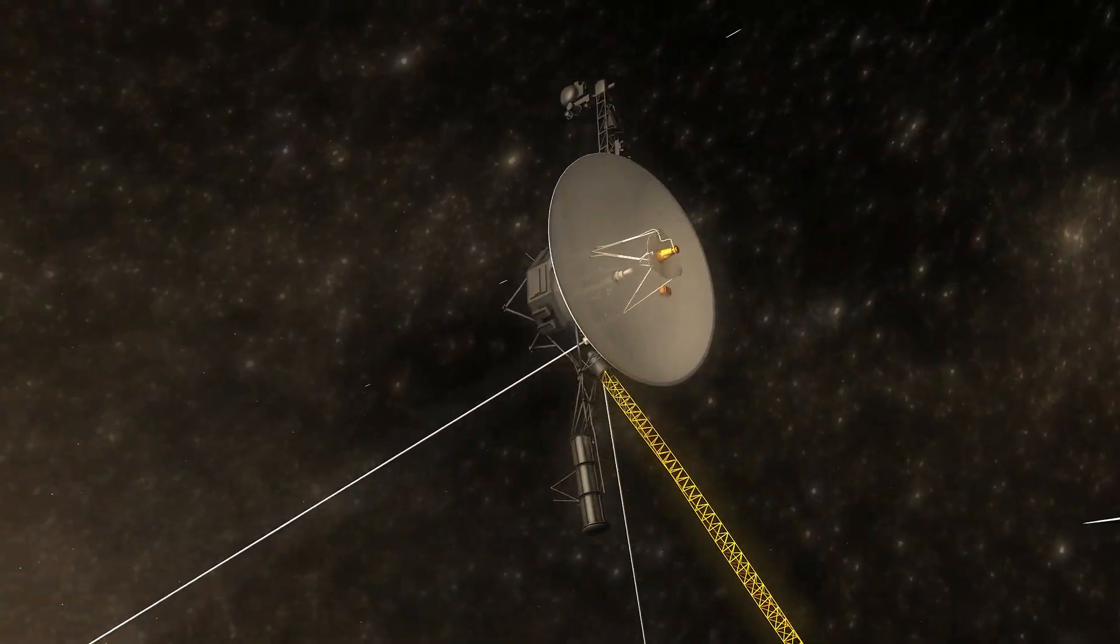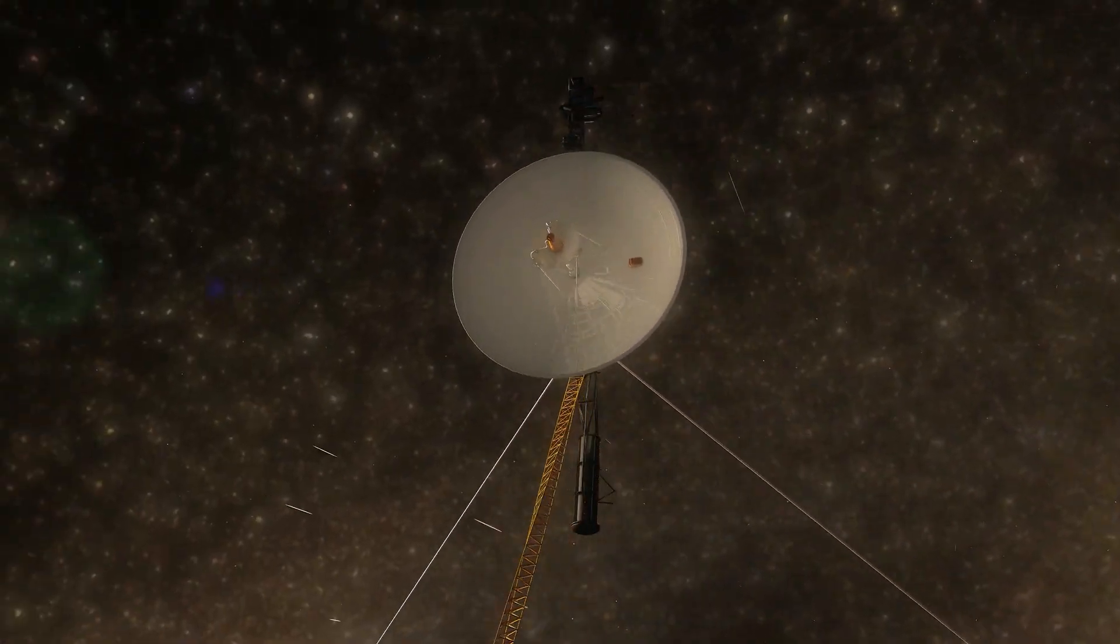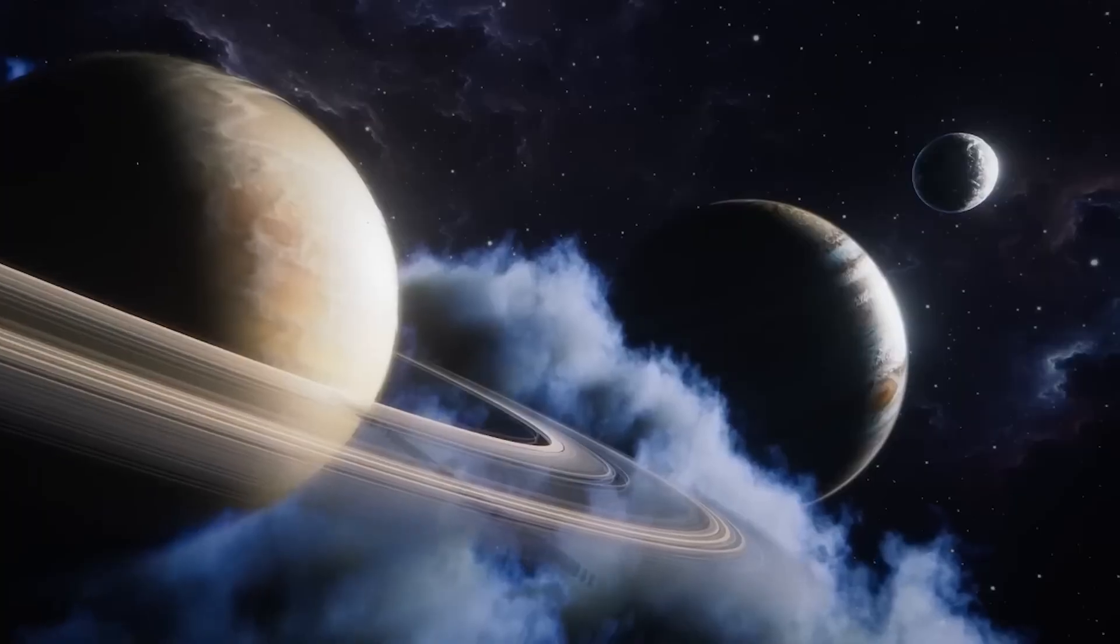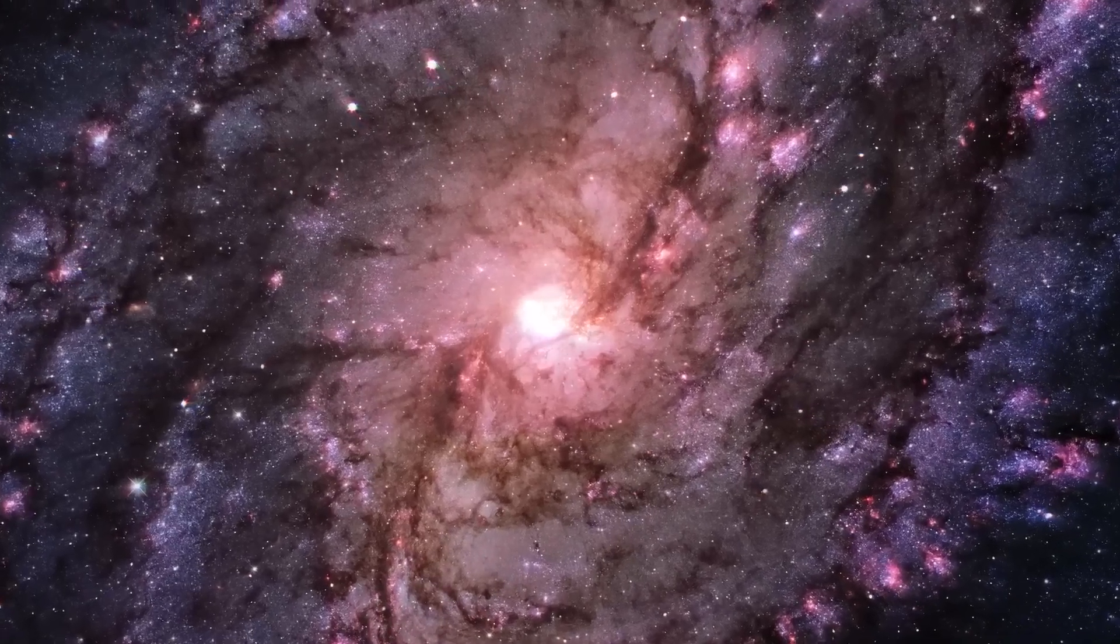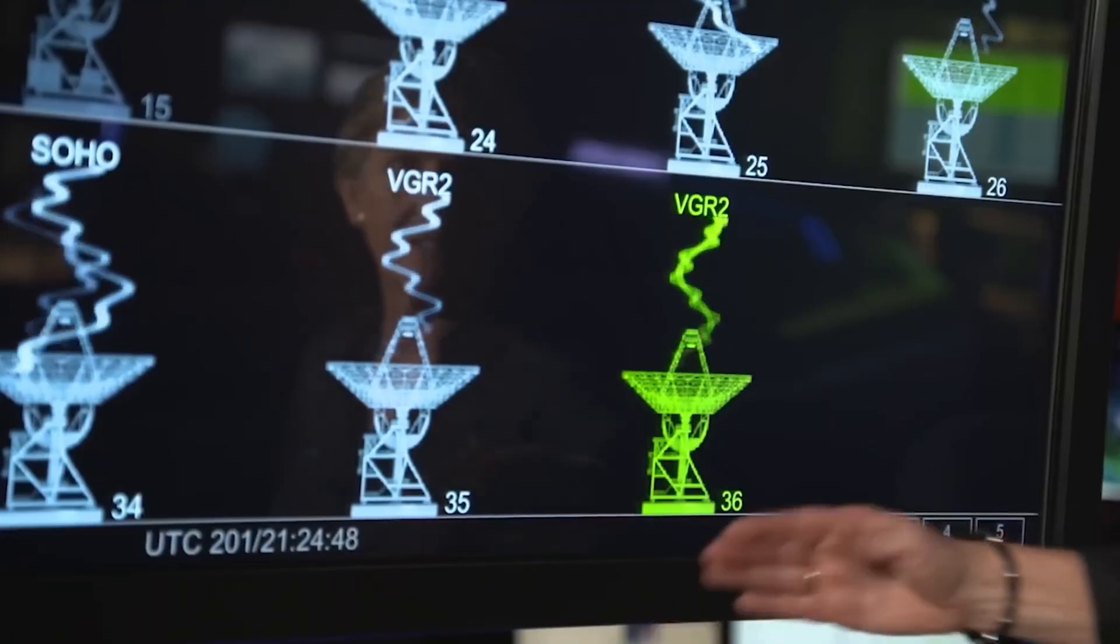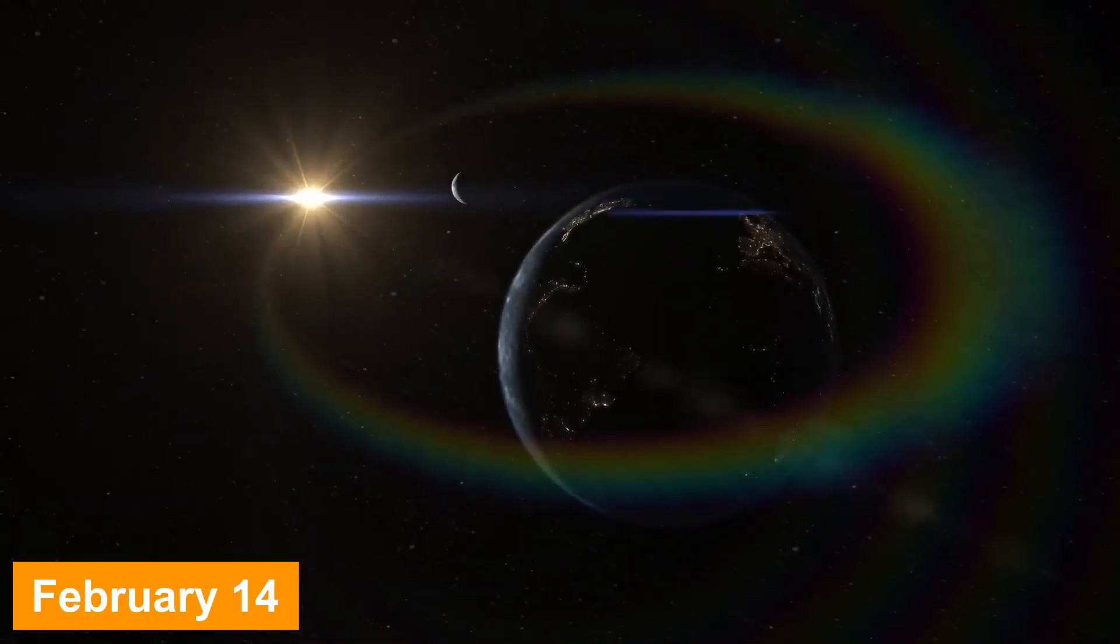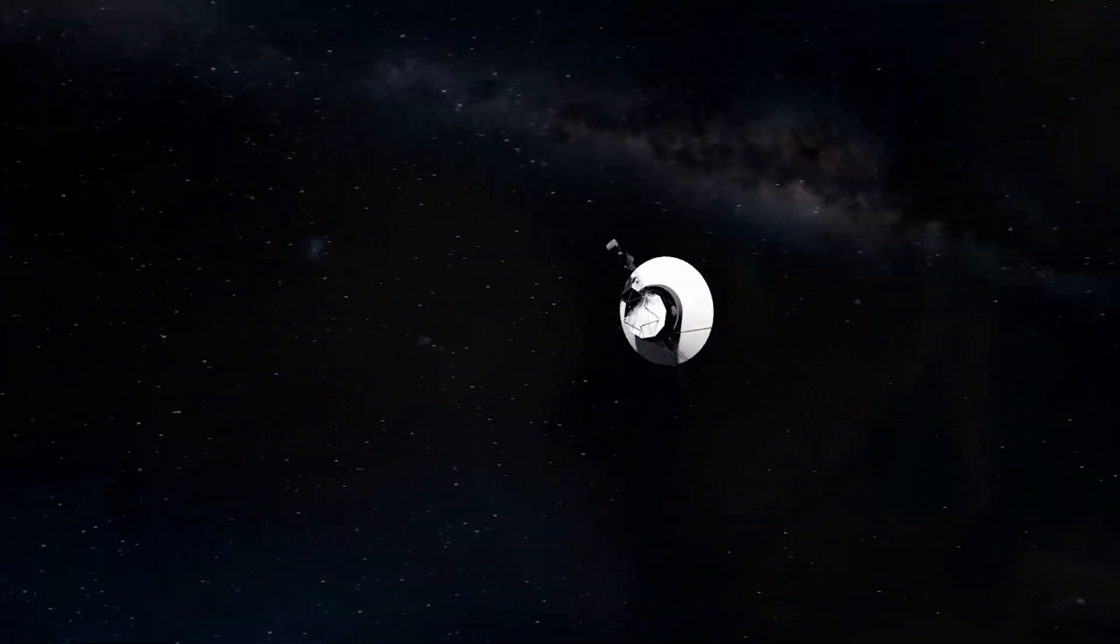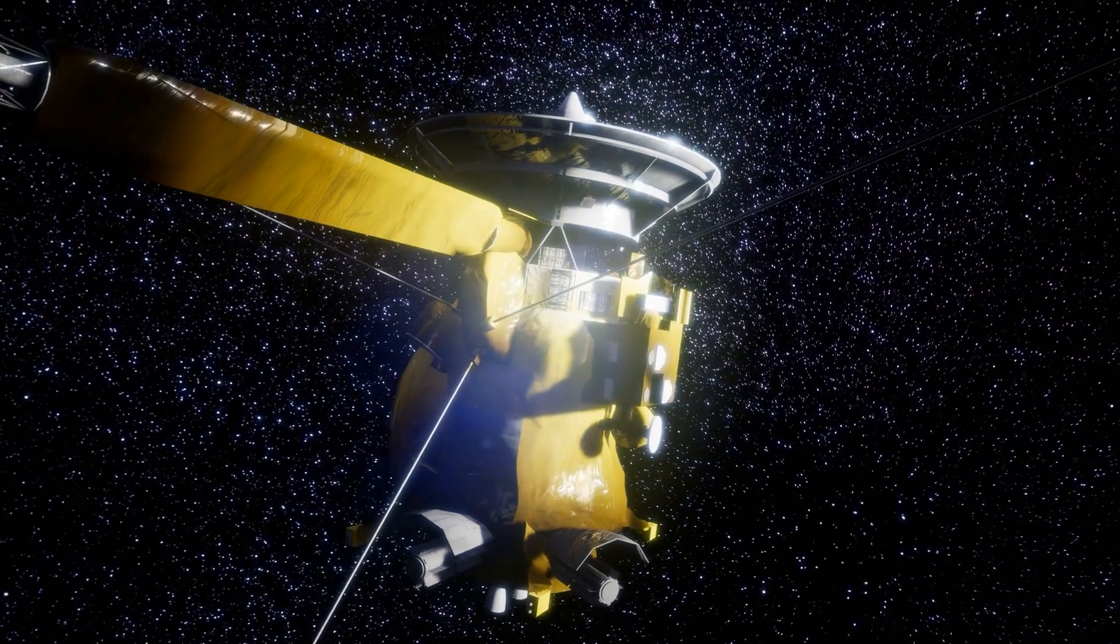The spacecraft ultimately completed its primary mission by transmitting amazing images of Jupiter and Saturn. Proceeding on its journey toward interstellar space, Voyager 1 also seized a historic moment when it captured a renowned image of our home planet on February 14, 1990, from a remarkable distance of approximately 3.7 billion miles. This vantage point offered a unique perspective.